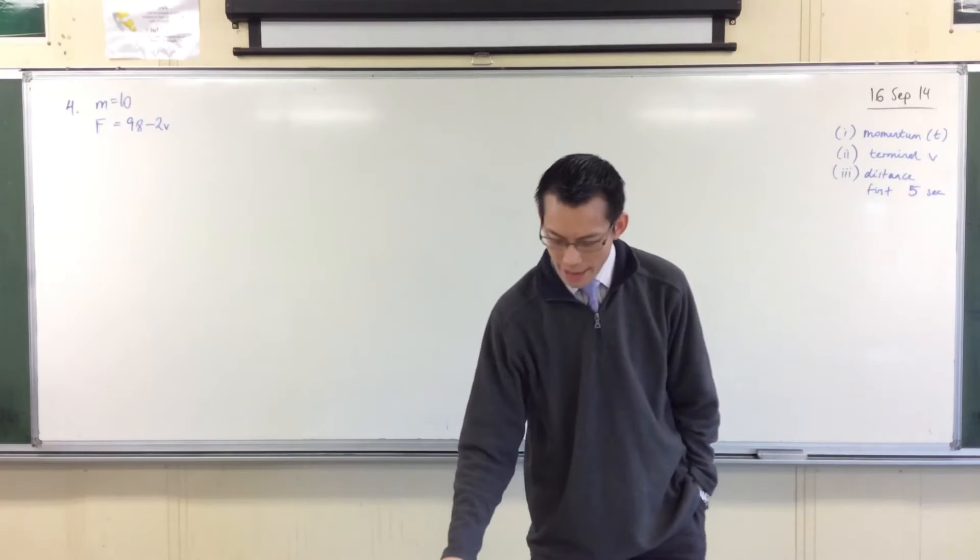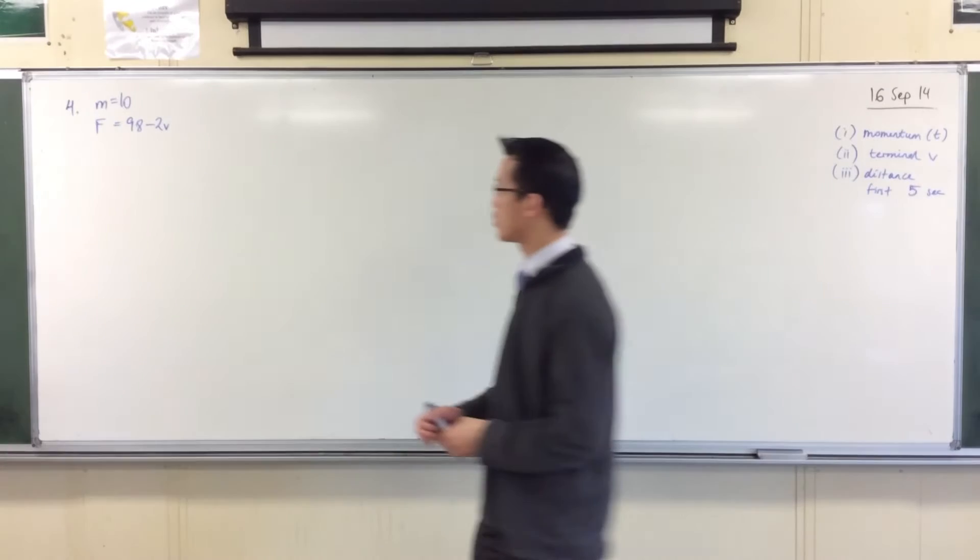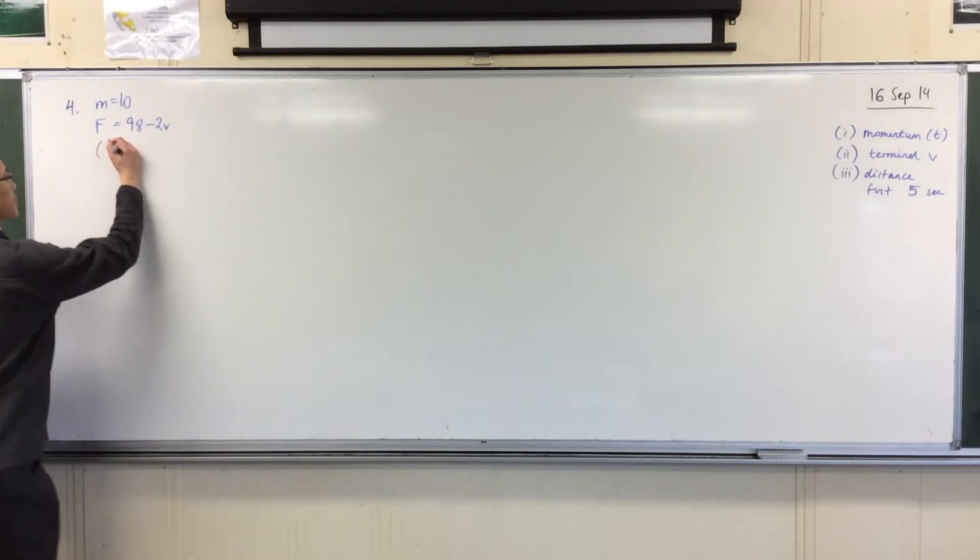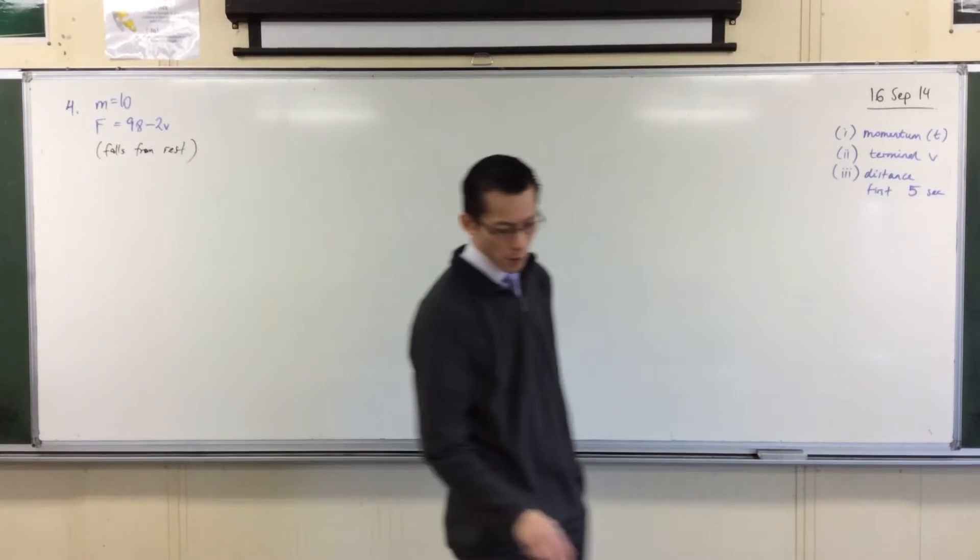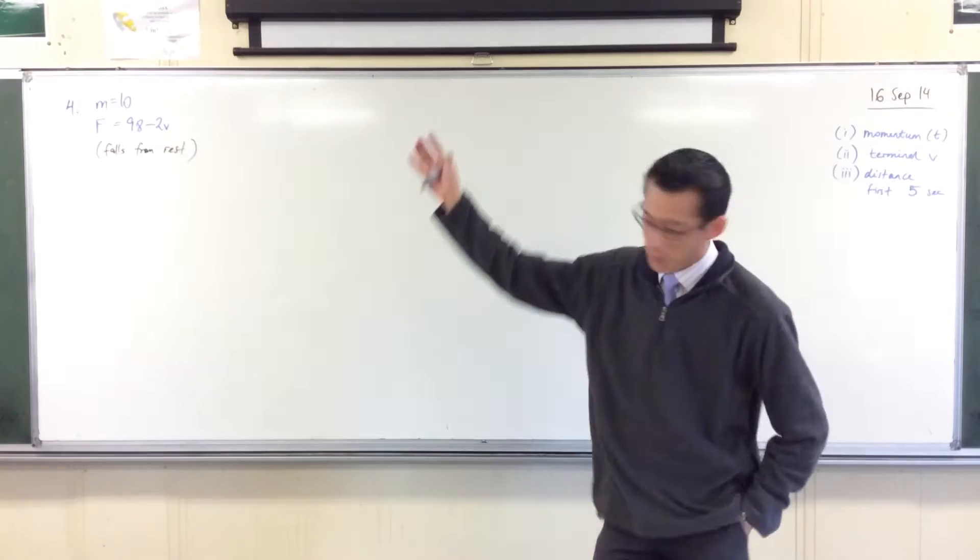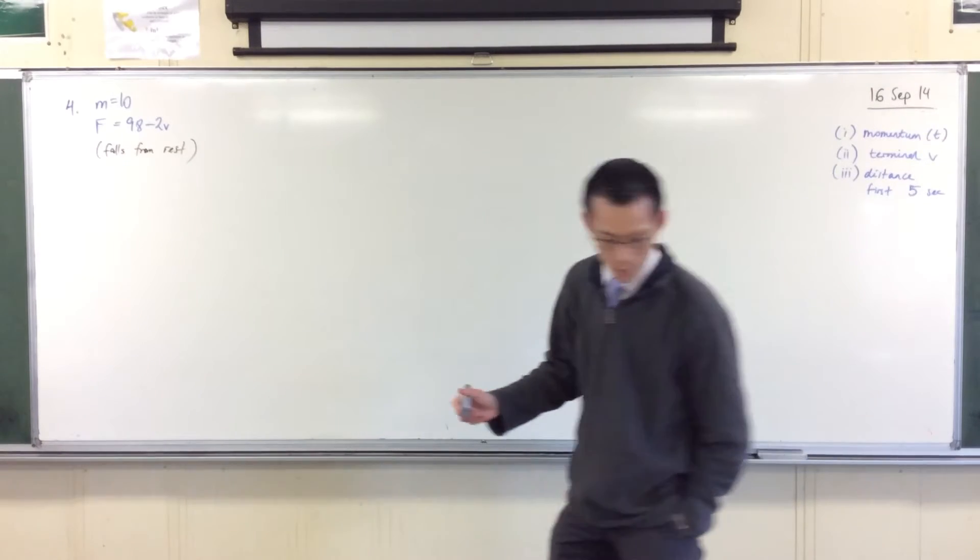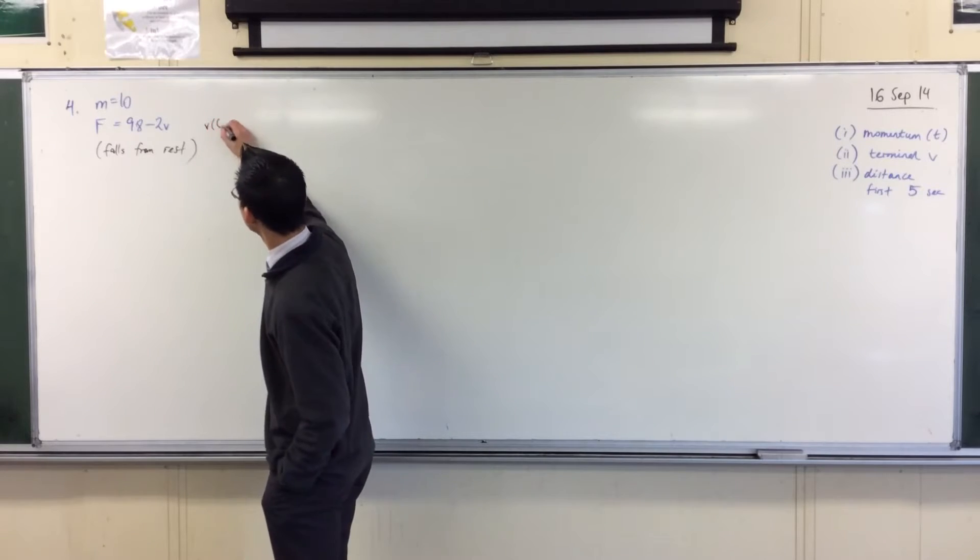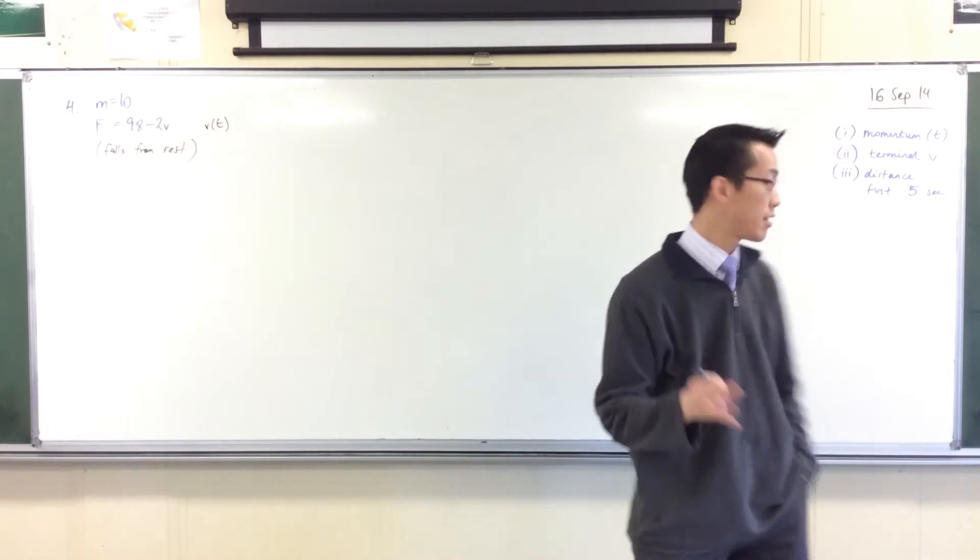It says a particle mass 10 kilograms falls from rest, should have mentioned that, falls from rest, that will become significant later. It falls from rest and is subject to a force of 98 minus 2v newtons, where v is the speed at time t seconds. So that's a function, but you expected that already. So we're looking for these three things.